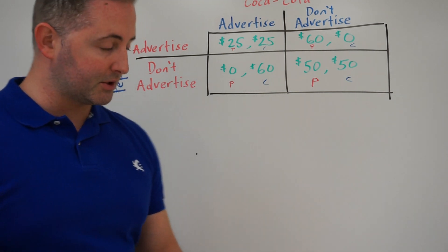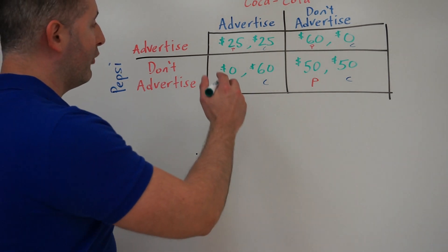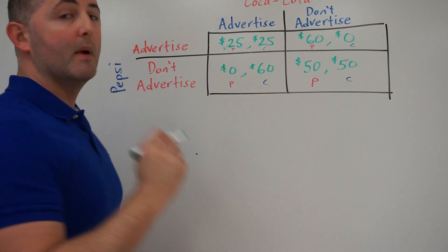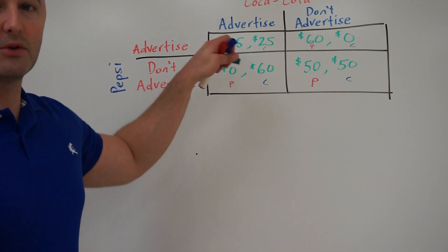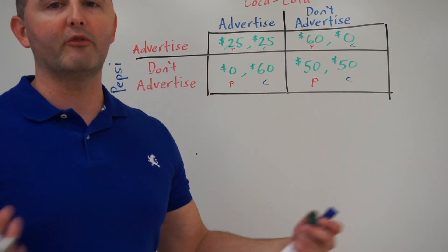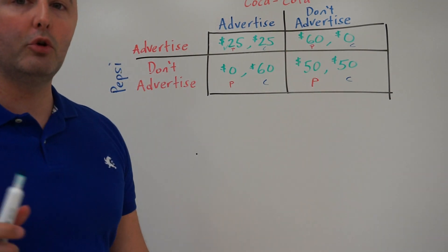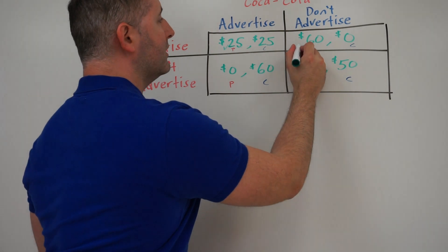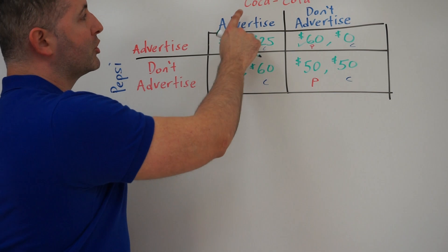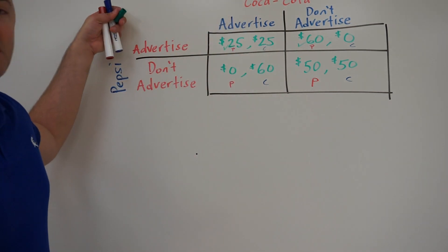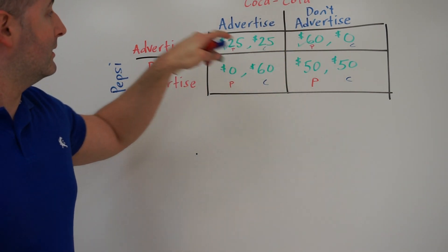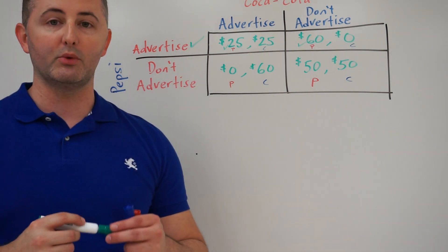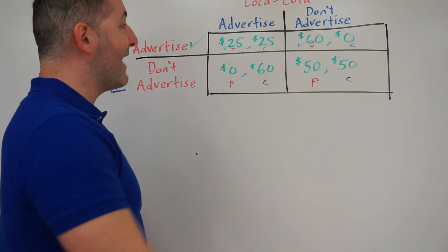$25 is greater than $0, so if Coke advertises, Pepsi is better off advertising. Now, if Coke doesn't advertise, Pepsi can earn $60 by advertising or $50 by not advertising. $60 is greater than $50, so Pepsi should advertise again. Regardless of what Coke does, Pepsi should always advertise — so Pepsi has a dominant strategy, and that strategy is to advertise.